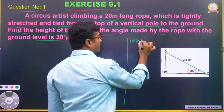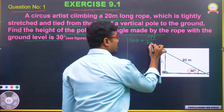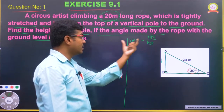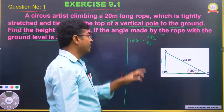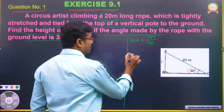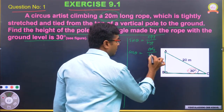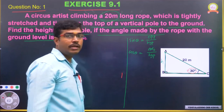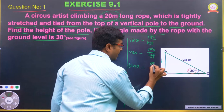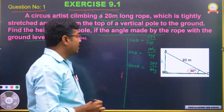Before solving, let us recall the important trigonometric ratios. Sin theta is opposite by hypotenuse. Cos theta is adjacent by hypotenuse. Tan theta is opposite by adjacent.